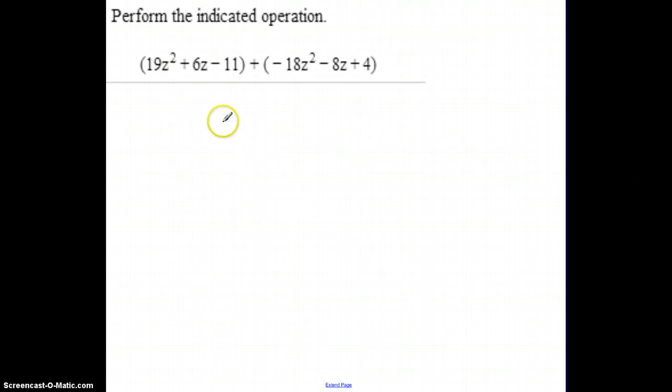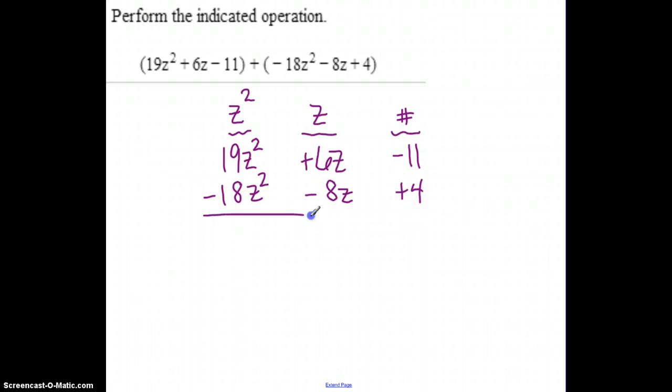Here's another add. So if I look at this one, z squared is the highest out of all of these. So I'm going to set up that standard form of z squared being the highest, then z, and then my number. So 19z squared, a positive 6z, and minus 11, negative 11, negative 18z squared, minus 8z is going to make that act like a negative 8, and plus 4. And now I just have to total my columns.